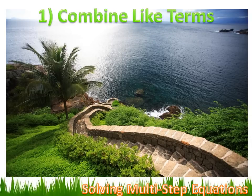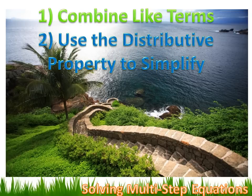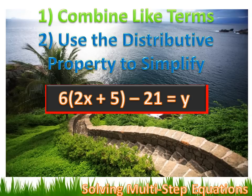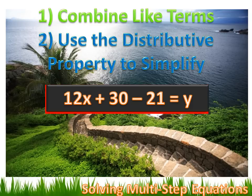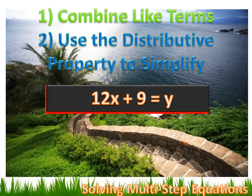So one of the first things I always want to do is combine like terms. Then I want to consider using the distributive property to simplify the expression. For example, 6(2x + 5) - 21 = y becomes 6·2x + 6·5 - 21 = y, which simplifies to 12x + 30 - 21 = y. I can then combine like terms — the +30 and the -21 — to get 12x + 9 = y.